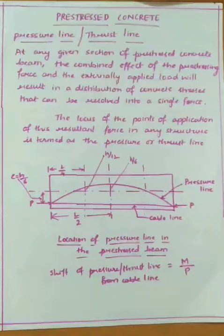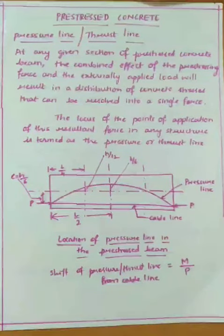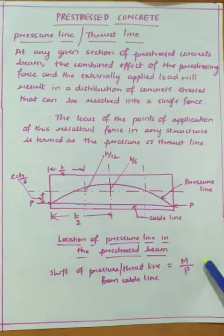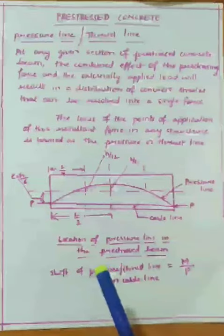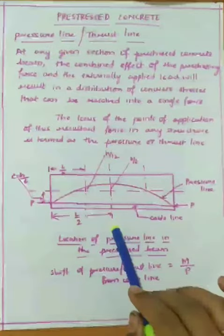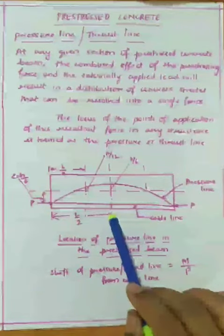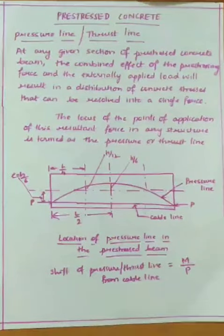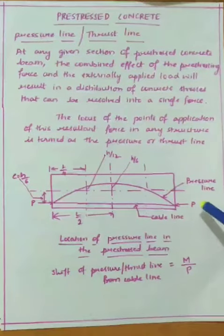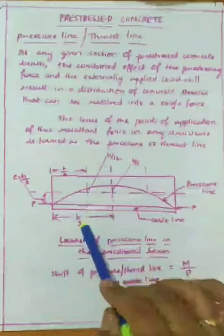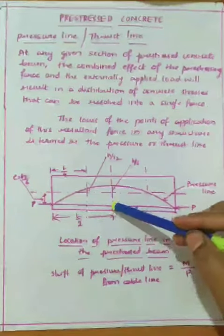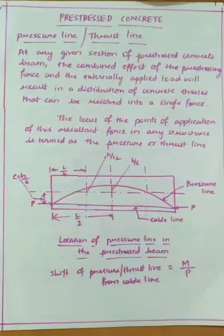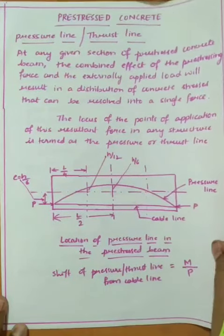We always find the pressure line or thrust line by calculating the shift of the pressure line from the cable line. It is determined as the bending moment divided by the prestressing force. If you want to find the shift of the pressure line at mid-span, find the bending moment at mid-span divided by the prestressing force. Similarly at quarter span, the bending moment at the quarter span section divided by the prestressing force gives the shift of the pressure line from the cable line.